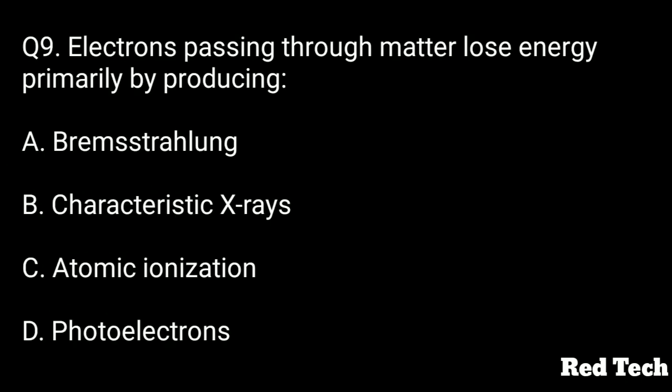Question number nine: electrons passing through matter lose energy primarily by producing — option A is bremsstrahlung, option B is characteristic X-rays, option C is atomic ionization, option D is photoelectrons.